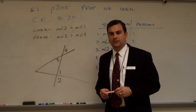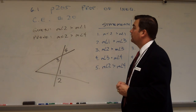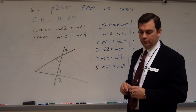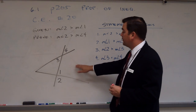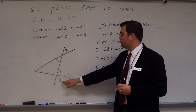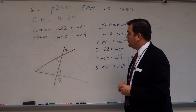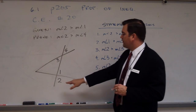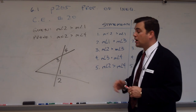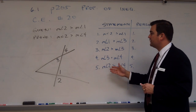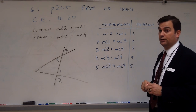This is Chapter 6, Lesson 1, page 205, Classroom Exercise number 20. I'm given a diagram where the measure of angle 2 is greater than the measure of angle 1, and I'm asked to prove that the measure of angle 2 must be greater than the measure of angle 4. This problem has supplied the five statements and I need to provide the reasons that justify those statements.